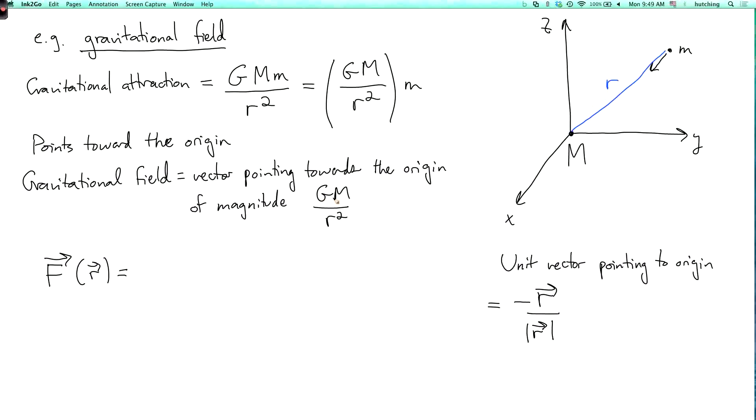Now I can take this unit vector and multiply it by the magnitude I want it to have. So I can take GM over the distance to the origin. That's now the length of r squared. So that's the magnitude I want. And then I have this unit vector pointing in the direction I want. So I have minus r over r absolute value. So I get minus GM vector r over length of r cubed. So that's the gravitational field.